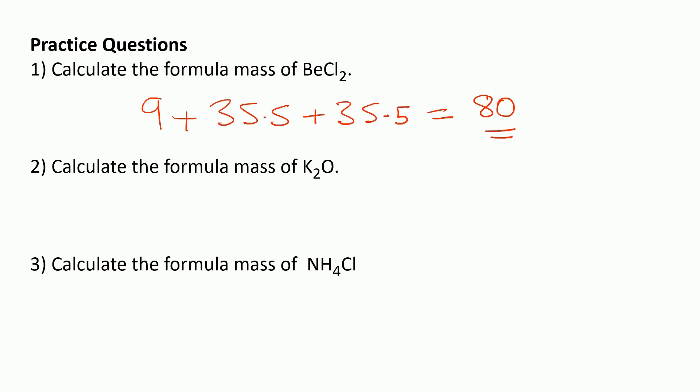Question two: Calculate the formula mass of K2O. Each potassium atom has a mass of 39, and there are two of those as we can see from K2O. Then we've got the oxygen atom which has a mass of 16, and that comes to 94.